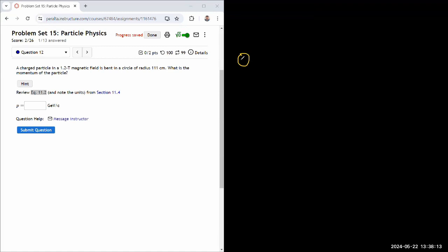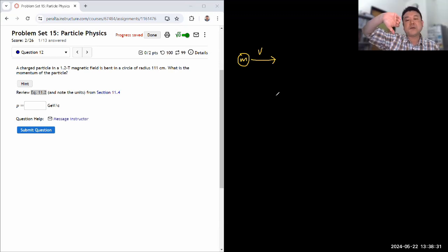You have a particle of some mass, which hopefully we don't have to know independently, moving at some speed v. And you're imagining a region of magnetic field. Let's say the particle is positively charged, so I want my v cross B to be downward, so my magnetic field should be coming out of screen. I'm imagining this particle moving in a region of magnetic field that looks like this.